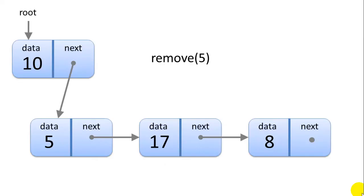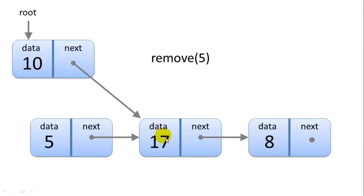For remove, first we have to find the node. So if we want to remove a 5, we start at the root. We'll compare 10 to 5 — they're not equal, so we go to the next. We found our 5 node. To remove the 5 node we simply change the next pointer in our previous node to 5's next. Now the 5 node is basically deleted — it's still there but it's excluded from our linked list.